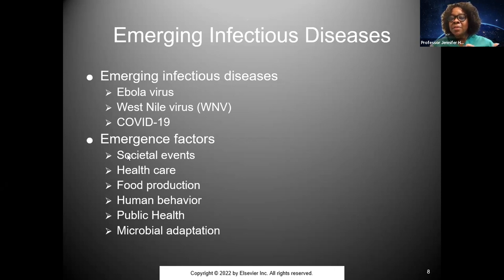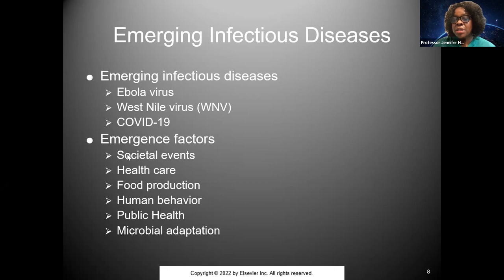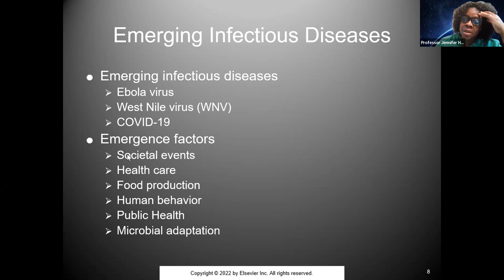Emerging infectious diseases are those in which the incidence of new cases has increased in the past two decades or has the potential to increase in the near future. Emerging diseases make us nervous — Ebola, West Nile, and now COVID. Look at your tables 11.2 and 11.1 for additional details, and make sure you always do your reading. Factors influencing emerging infectious diseases are listed, and human behavior is huge — what we're doing, what we're not doing, and what we can do, which is where primary prevention is pivotal.